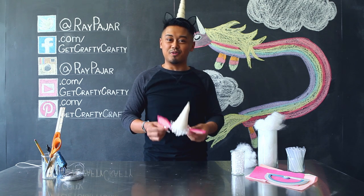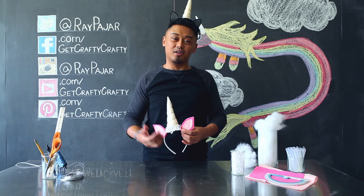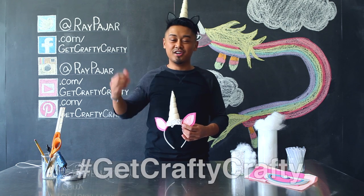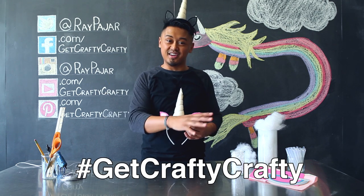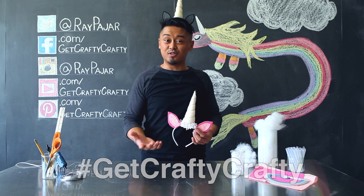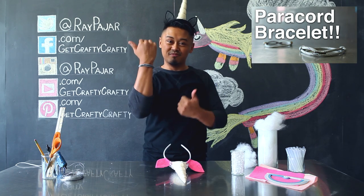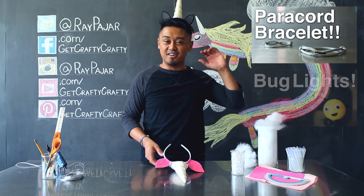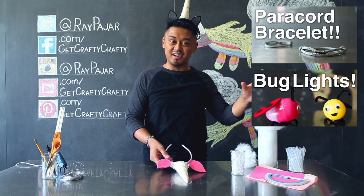If you guys make this project, make sure you share it with me either on my Facebook, Instagram, or Twitter using the Get Crafty Crafty hashtag and make sure you check out our last two videos, the paracord friendship bracelet and our Easter egg recycled bug light.